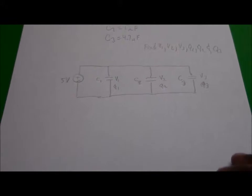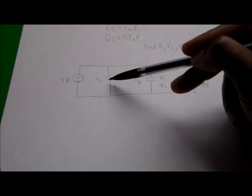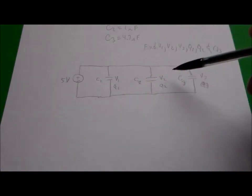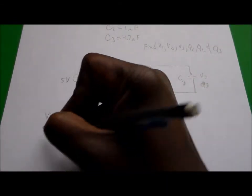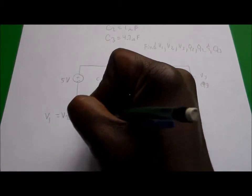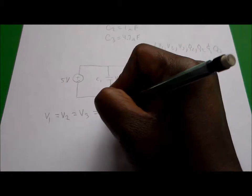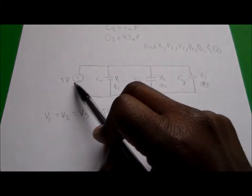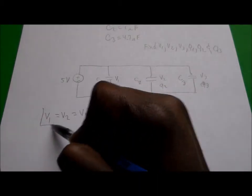So now, in order to find the voltages, if we recognize that since these are all in parallel, that means there's five volts across each of those capacitors. We know that V1, which is equal to V2, which is equal to V3, they all have to have the same voltage across them, and that voltage is 5 volts because the voltage source is in parallel with all three of these capacitors. So we've already found the voltages across all three.